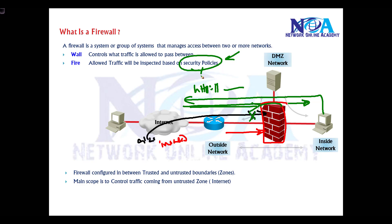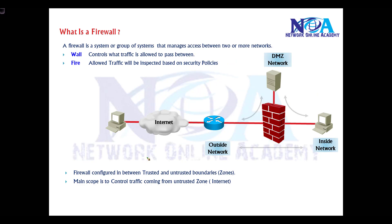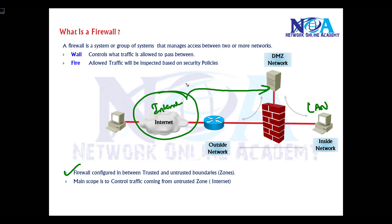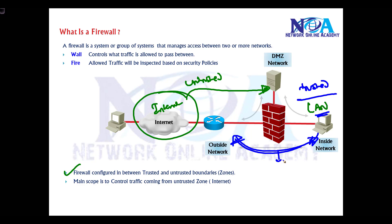The firewall also maintains additional state information, which we will discuss in detail in later topics. Firewalls are generally configured between trusted and untrusted boundaries, especially from the LAN to the internet. Traffic coming from the internet is typically referred to as untrusted, while traffic from the LAN is considered trusted. All traffic going between these zones should be monitored and inspected, and the main scope of the firewall is to control what traffic is allowed into the LAN or DMZ.